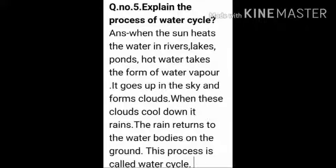Question 5: Explain the process of water cycle. Answer: When the sun heats the water in rivers, lakes, ponds, the hot water takes the form of water vapour. It goes up in the sky and forms clouds. When these clouds cool down, it rains. The water returns to the water bodies on the ground. This process is called water cycle.